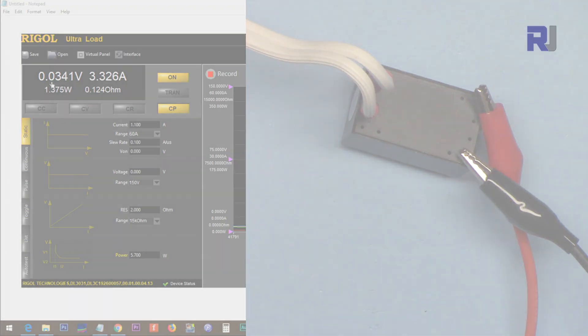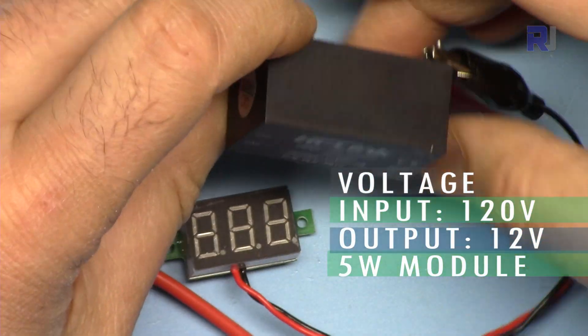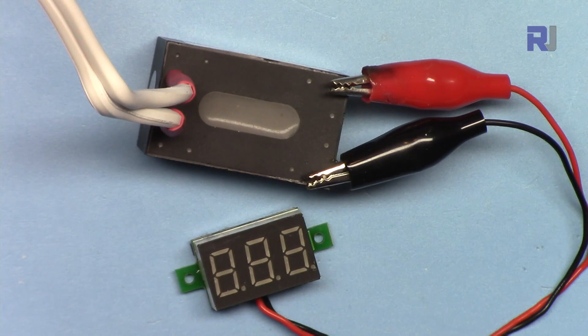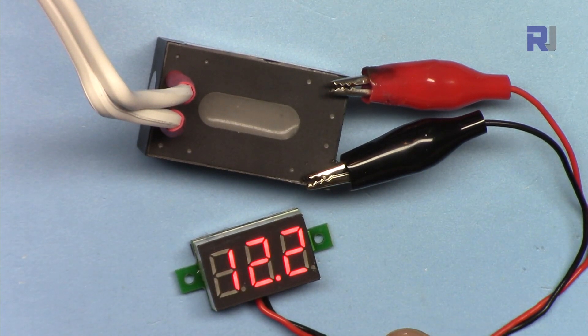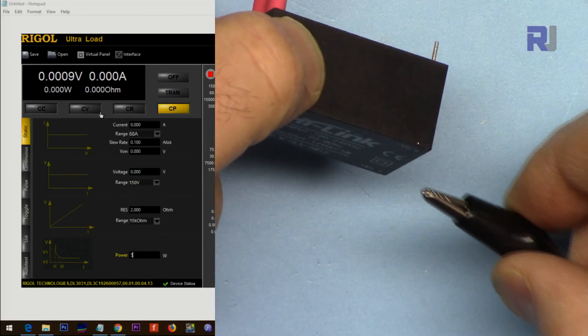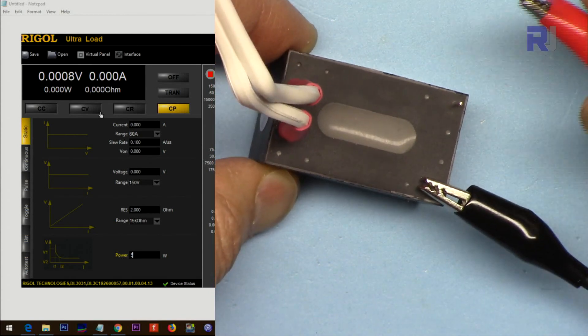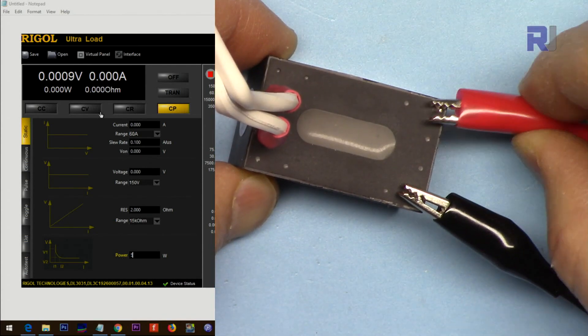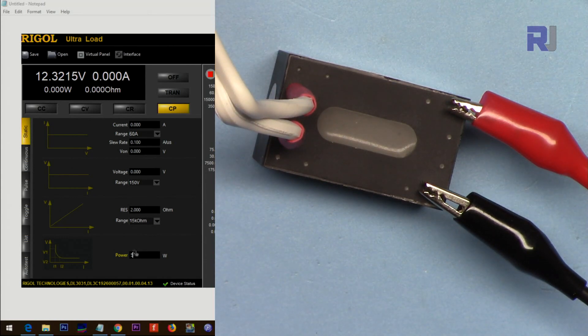Now this is the 12 volts module. It has been connected and we are getting 12 volts. Let me connect it to the load. These two wires are for my load. At 5 watts it's just protecting it and the voltage is down so it doesn't work.